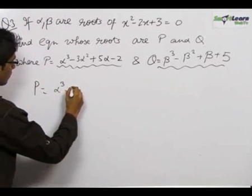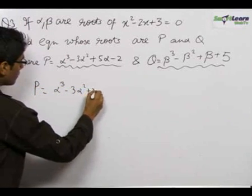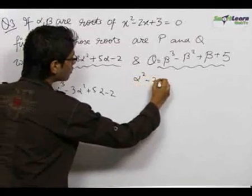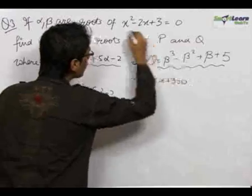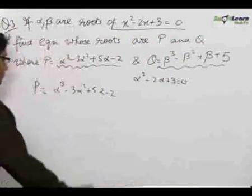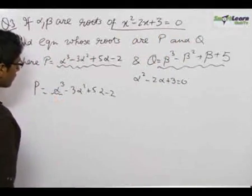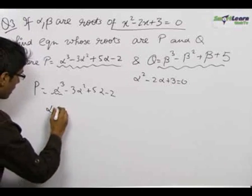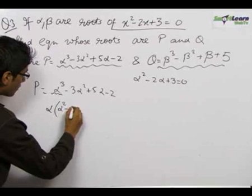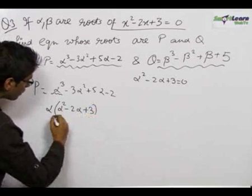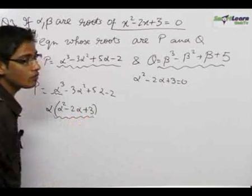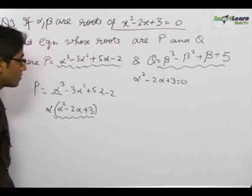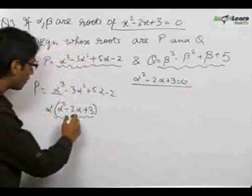p is given as α³ - 3α² + 5α - 2, and since alpha is a root of the equation, we know α² - 2α + 3 = 0. We try to reduce this cubic term by writing it as α(α² - 2α + 3). The trick is to create the factor (α² - 2α + 3), because we know its value is 0.